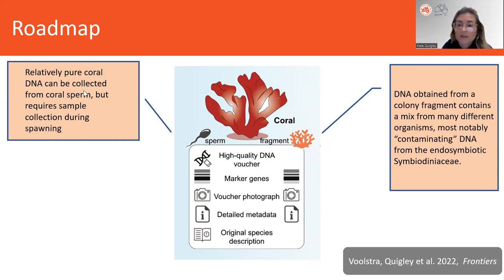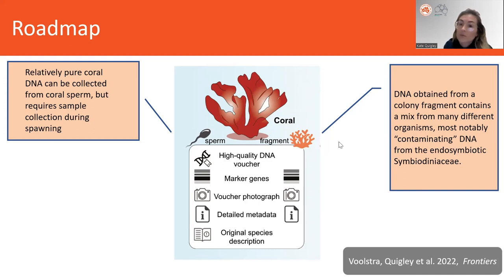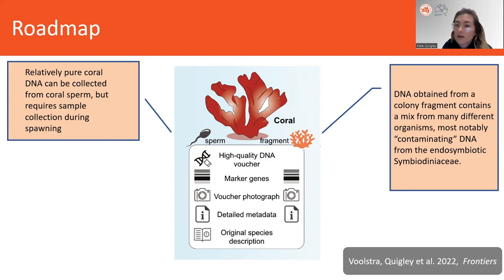All corals don't have symbionts associated with the sperm. There are some symbionts associated with the eggs of particular coral species, but this unfortunately requires collection during coral spawning, which can be quite challenging and limiting. Alternatively, you can get genomic DNA from coral fragments or coral adults, but oftentimes you'll get contaminating DNA from different microbial partners. We have protocols for both methods and go through what genomic DNA you can get, as well as what metadata is needed.